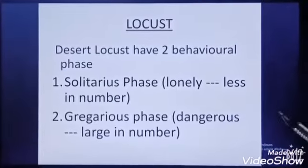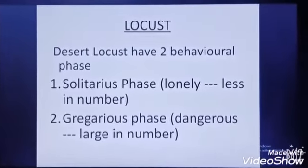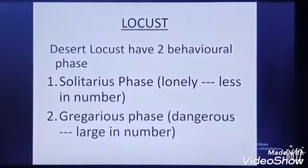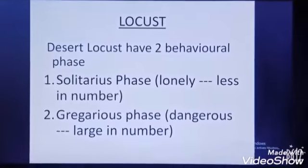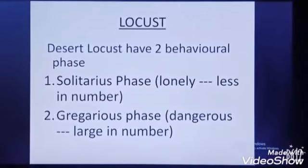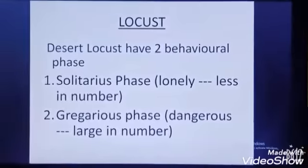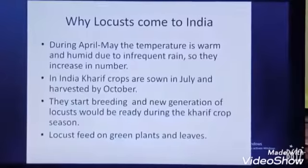Desert locusts have two types of behaviour. When they are less in number, they are solitary, which is known as the solitarius phase. When they are large in number, it becomes a dangerous phase called the gregarious phase.